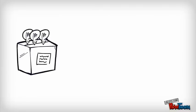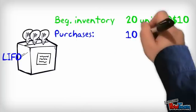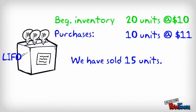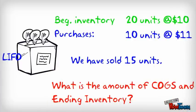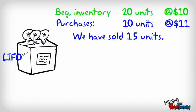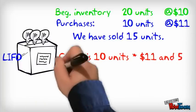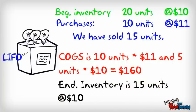Let's solve the same problem but now using LIFO. The same beginning inventory and the same purchases — again, we have sold 15 units. Find the cost of goods sold and ending inventory. Under LIFO, whatever we bought last is the first to be sold. Since we sold 15 units, that means we sold 10 units at the price of $11 — we bought these last — and 5 units at the price of $10, for a total of $160. The ending inventory is what we have left: 15 units at $10.